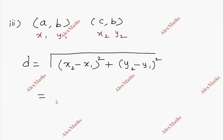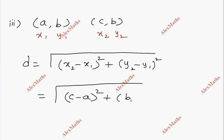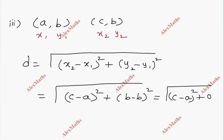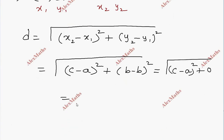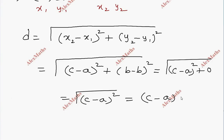So this is the square root of (c minus a) whole square plus (b minus b) whole square. That simplifies to the square root of (c minus a) whole square plus 0 squared. The square and root cancel, leaving a balance of c minus a units.